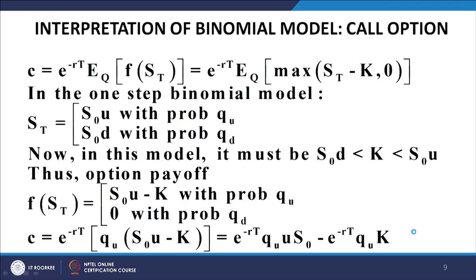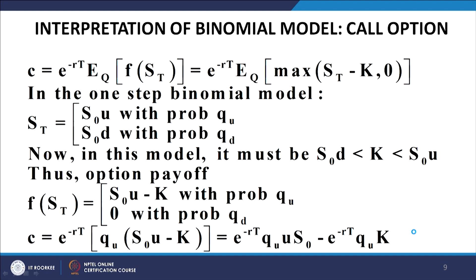Now, an interpretation of the binomial model — this is important. The value of the derivative, for the moment let us call it a call option, as the call option is the most common derivative used in financial literature for explaining derivative concepts. So the call option value is given by the formula: the present value of the expected future payoff, with the expectation calculated with respect to risk-neutral probabilities.